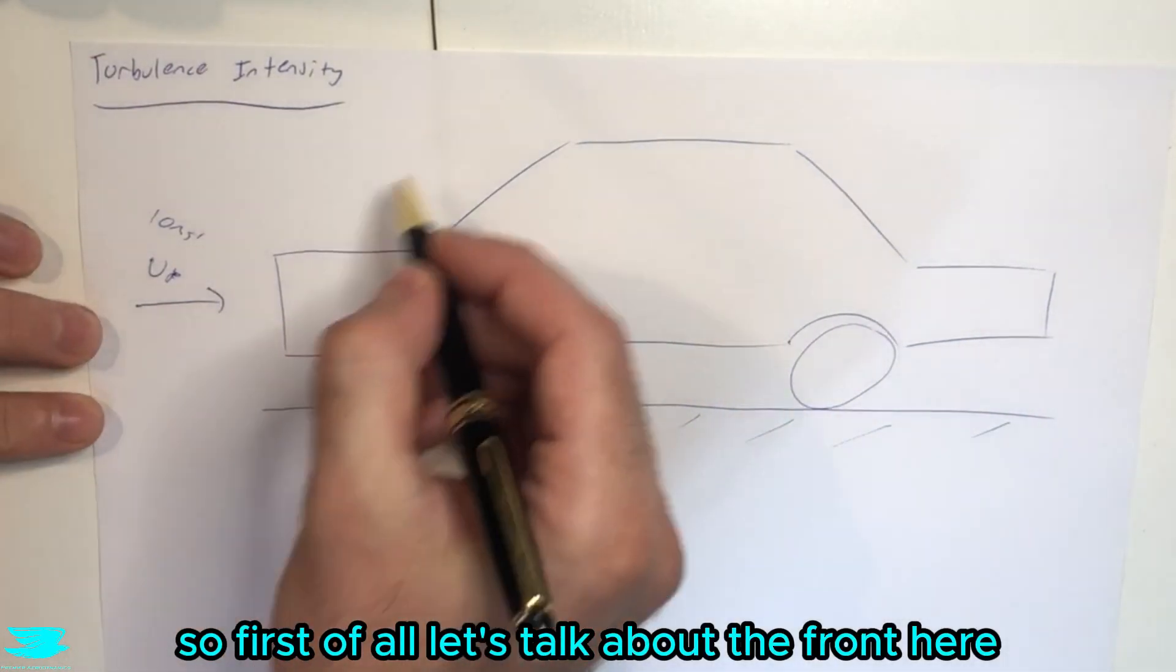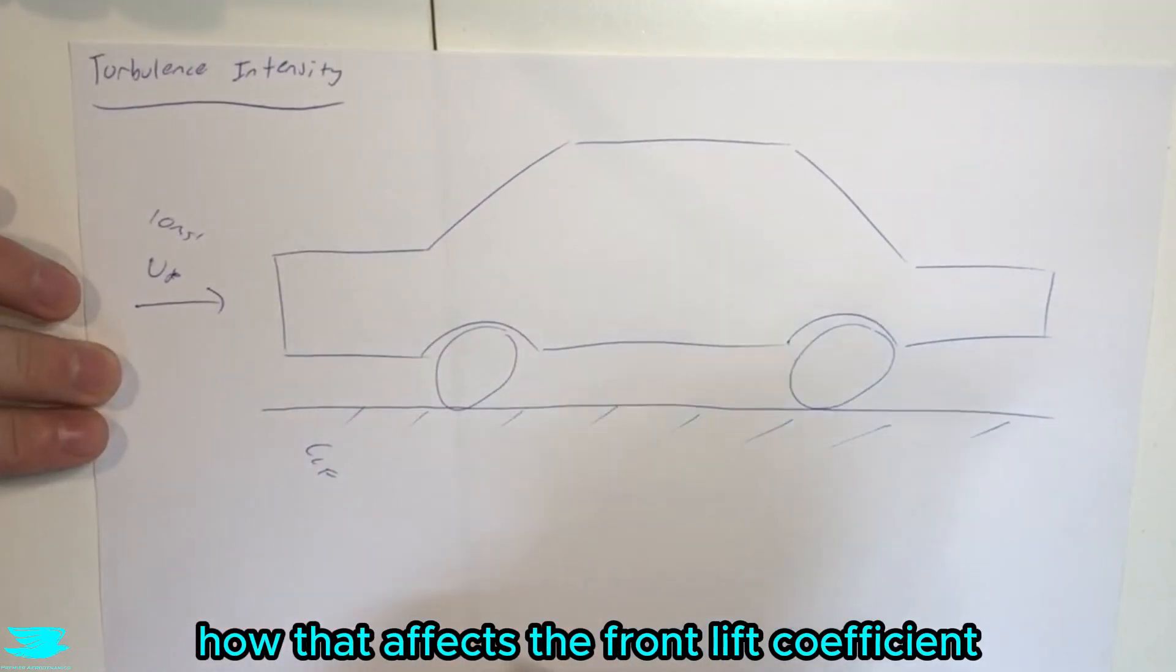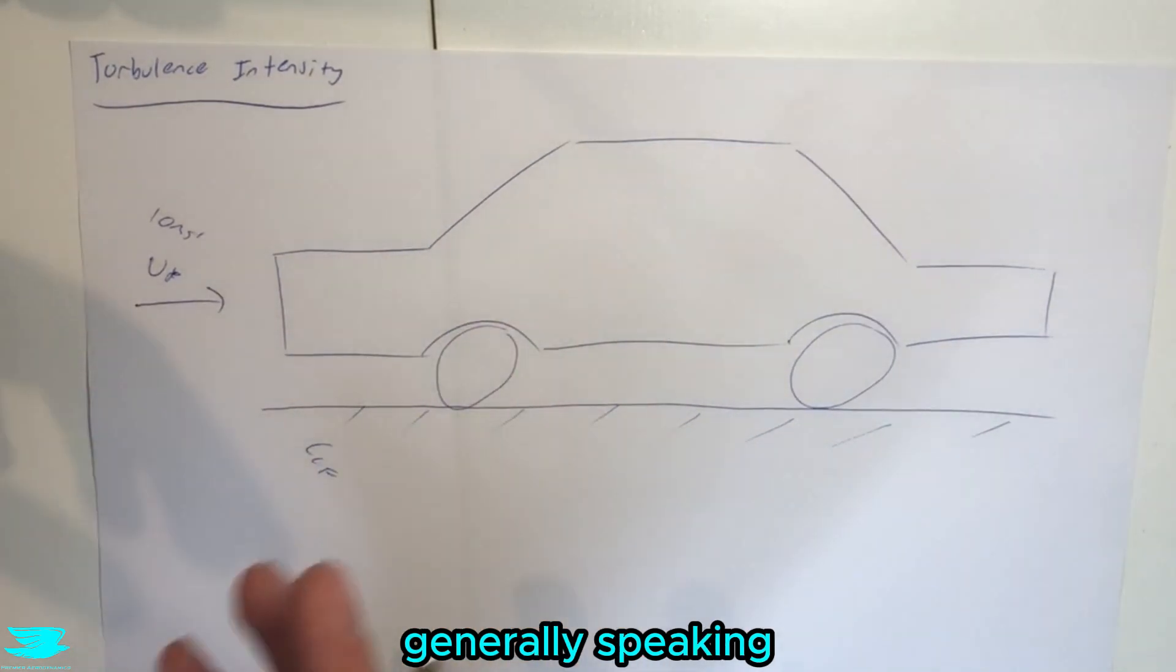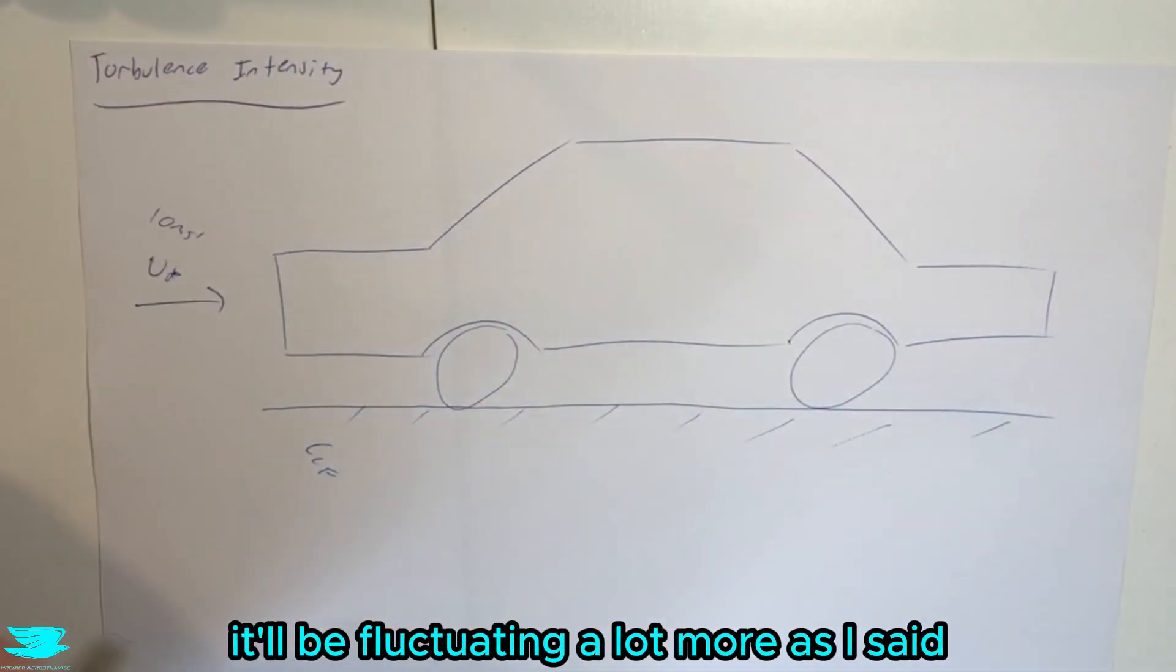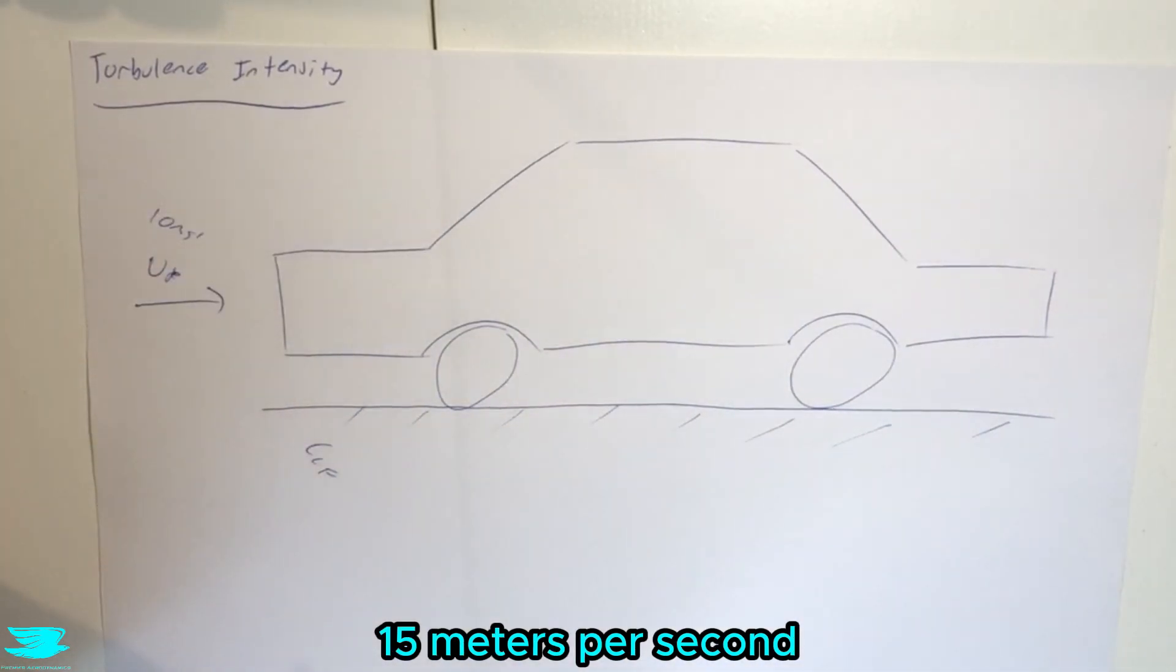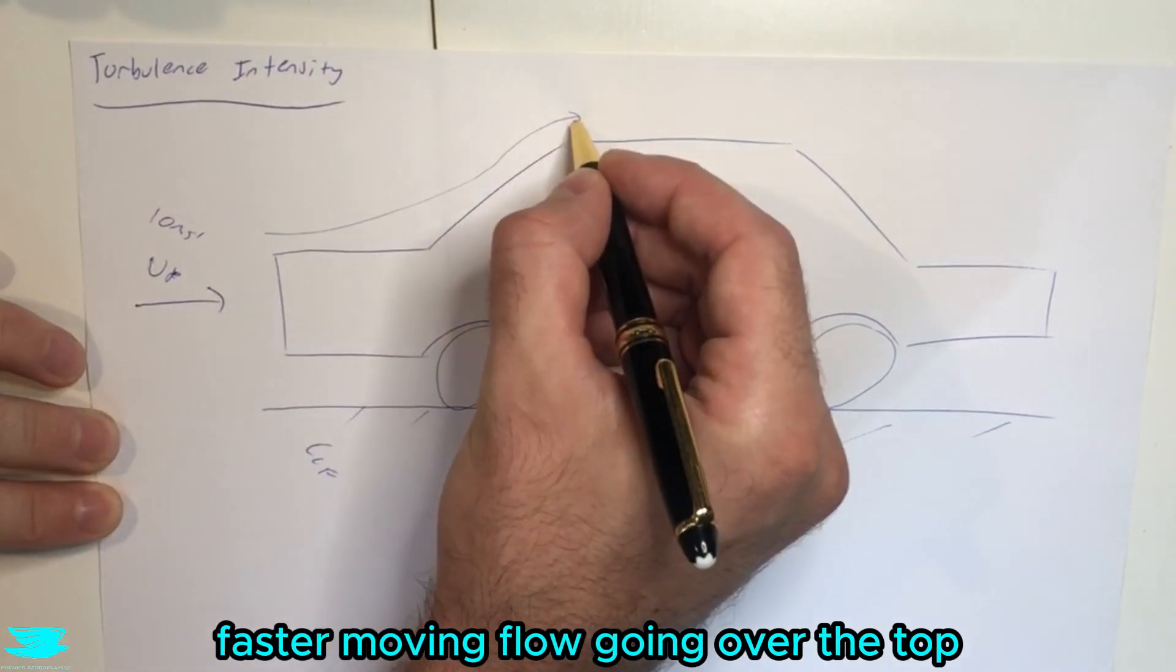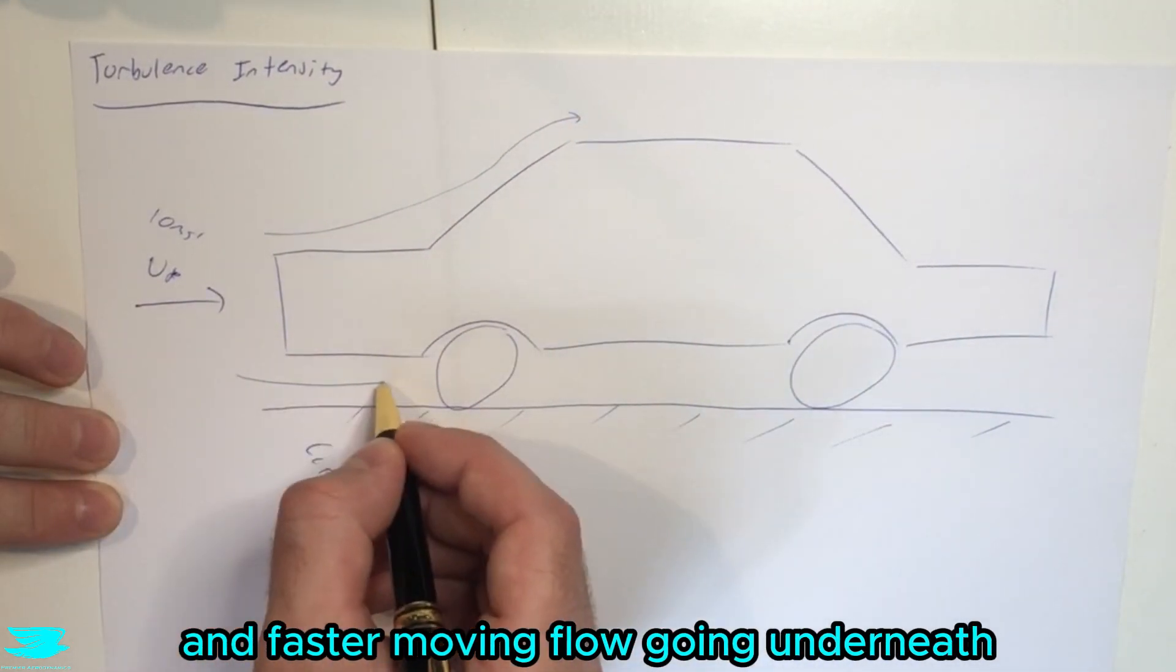So first of all, let's talk about the front here and in particular how that affects the front lift coefficient. So as the flow goes over here, generally speaking, it'll be fluctuating a lot more. As I said, it could be between 6 meters per second and 15 meters per second. So as a result, there will often be higher, fast moving flow going over the top and fast moving flow going underneath.